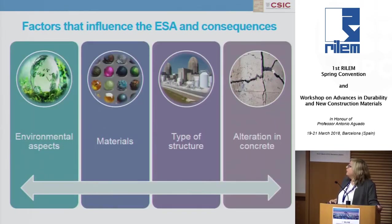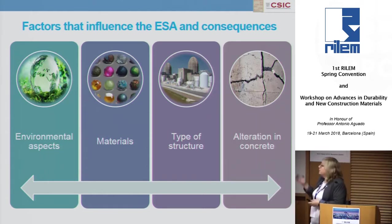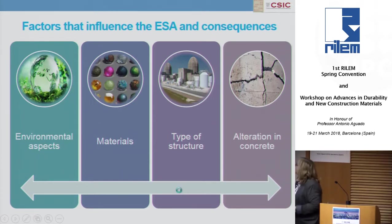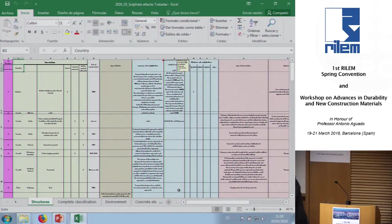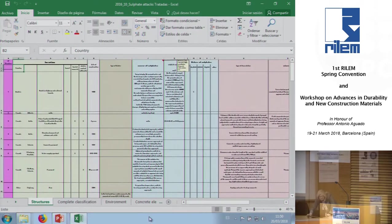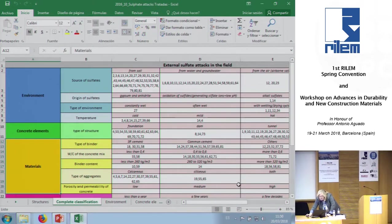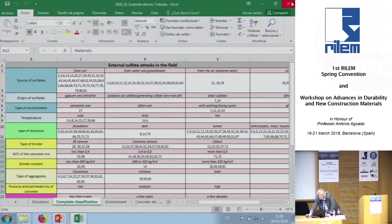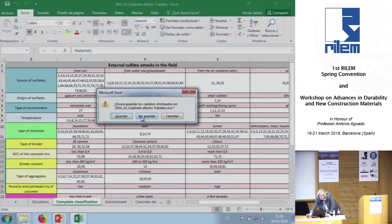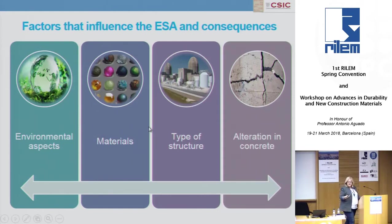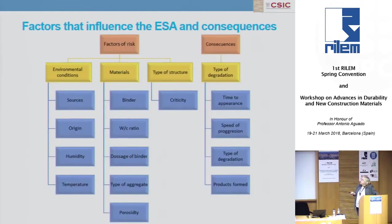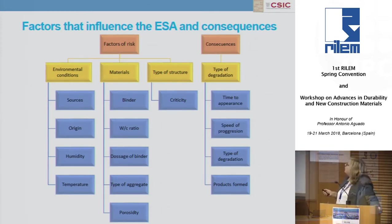We have analyzed the different parameters that we can extract from the papers. Here I want to show, if you want, the Excel file. We have a lot of structures and have analyzed many parameters, different parameters, and we have classified this information in different files related with the structure. With all this information, we have defined a flowchart regarding different factors.